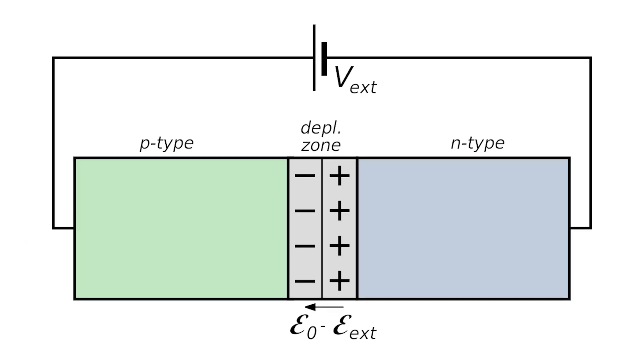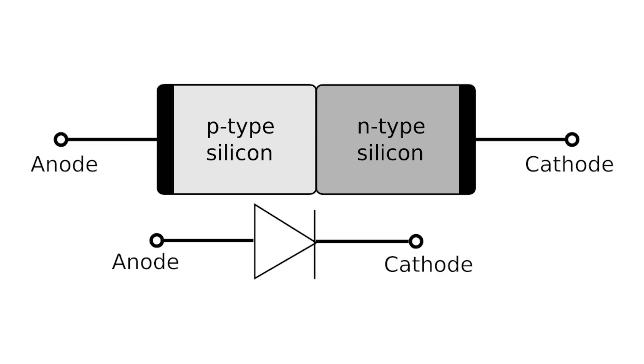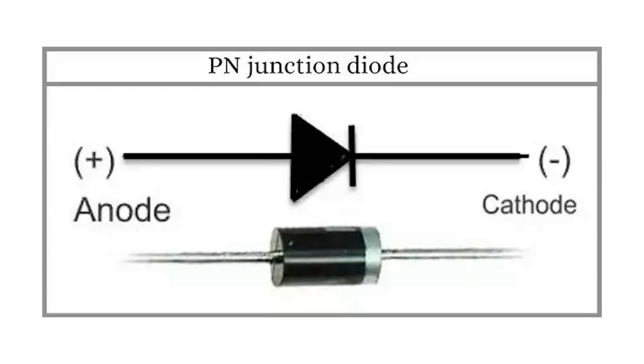The result of this process is that the p-n junction has rectifying current voltage IV characteristics. Electrical contacts, called terminals, are fused onto either side of the semiconductor to enable electrical connections to an external circuit. The resulting electronic device is commonly called a p-n junction diode or simply a diode.